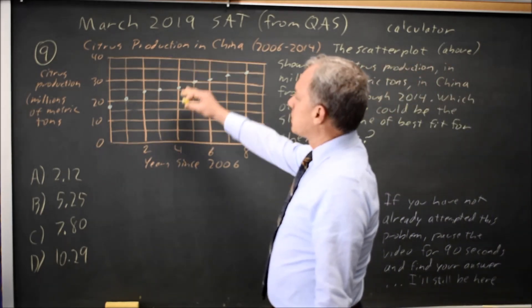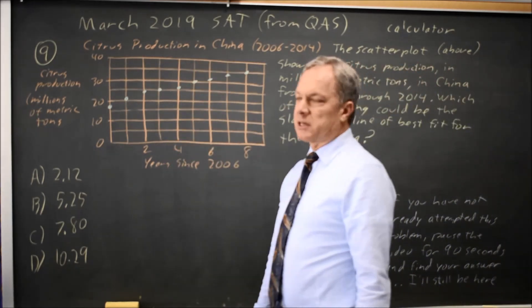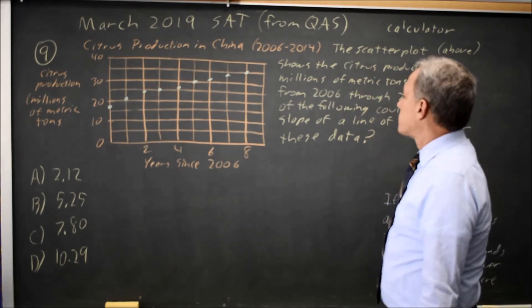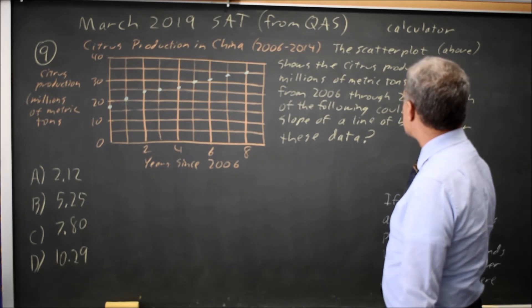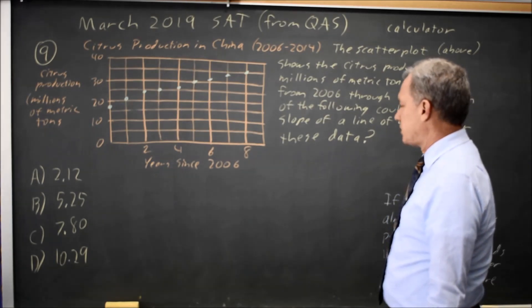Okay, College Board gives us a table with data showing citrus production in millions of metric tons for China over this time period, and they ask for the slope of the line of best fit for these data.